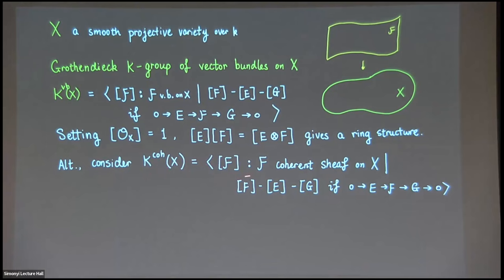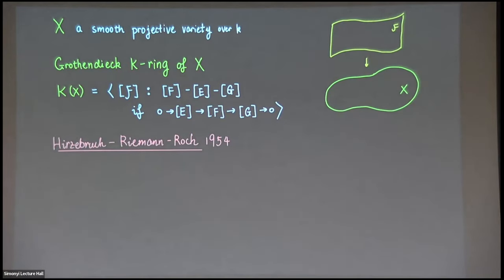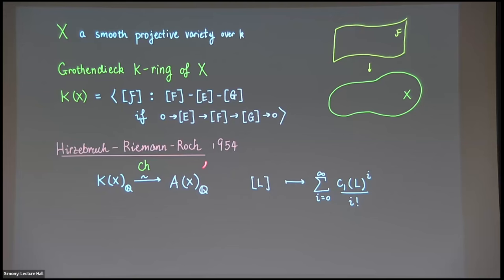You can analogously define something using coherent sheaves. But Hilbert's Serre's theorem tells us that because we have a smooth projective variety to start with, these two structures are the same. So from now on, I just denote the structure as K(X). In 1954, Hirzebruch extended the classical result by Riemann-Roch, saying there is an intimate relationship between the K-ring of a smooth projective variety and the Chow ring, which is generated by subvarieties of X modulo rational equivalence. There exists a morphism called the Chern character from the K-ring tensored with ℚ, and this Chern character is an isomorphism.